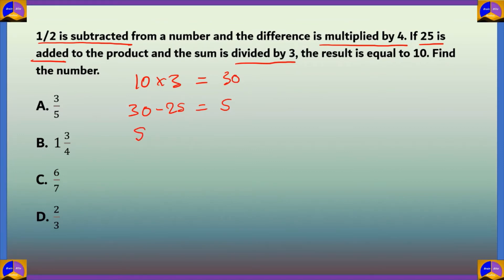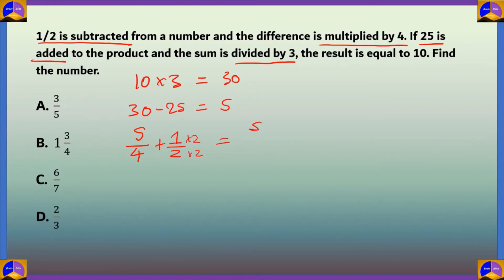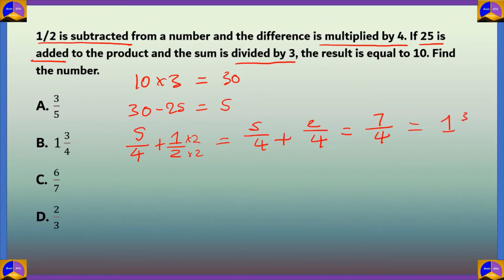The next statement is multiplied by 4, whose reverse is dividing by 4, giving 5/4. The last statement is that 1/2 was subtracted from the number, so we add 1/2: 5/4 plus 1/2 equals 5/4 plus 2/4 equals 7/4. Converting to a mixed fraction gives 1¾, which is option B — the correct answer.